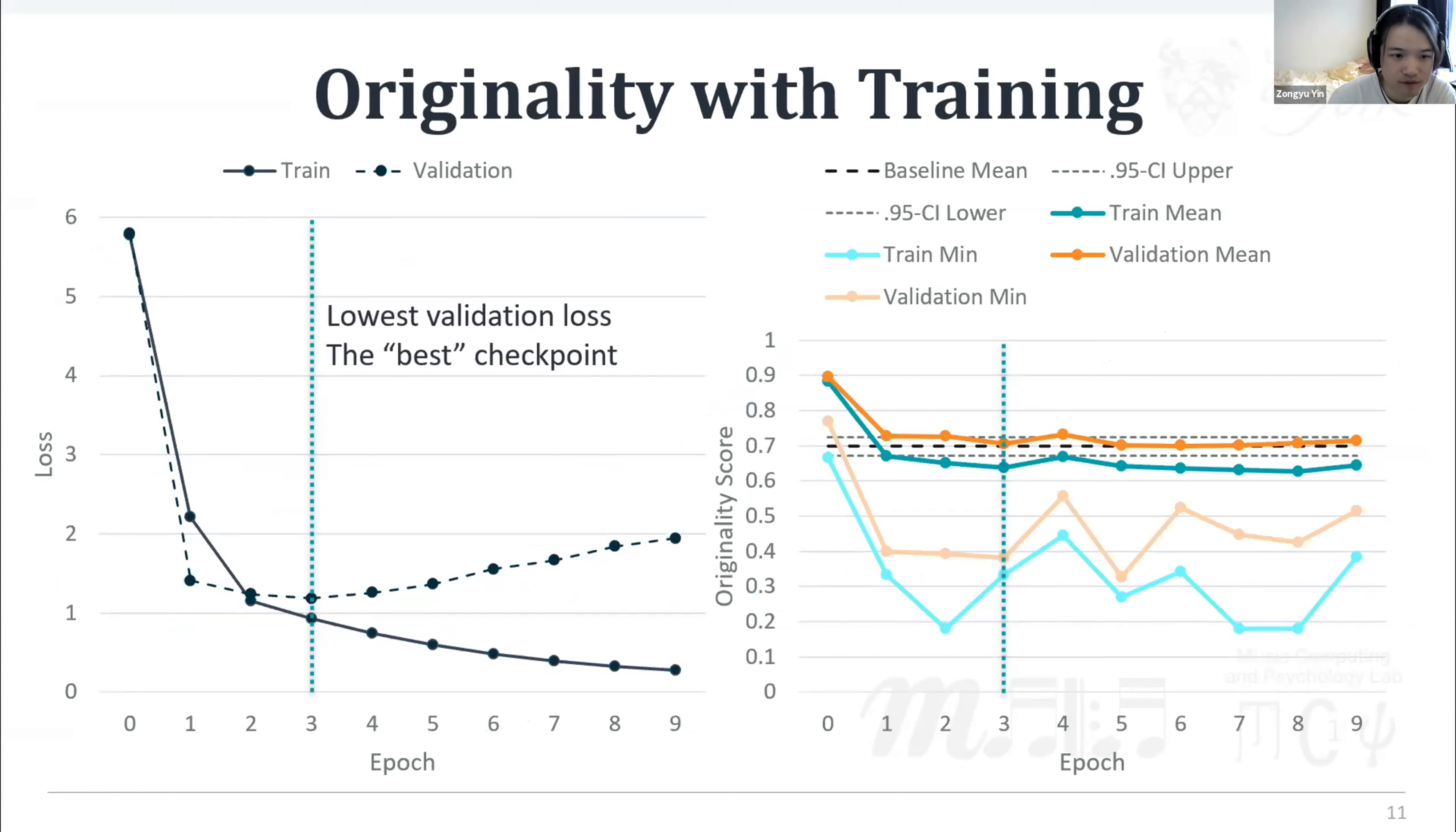Considering Music Transformer, we further investigate the originality changes during the model training process. On the left, we first show the loss change with epochs. At epoch 3, the validation loss reaches the lowest point where we can obtain the best version of the model based on the conventional stopping criteria.